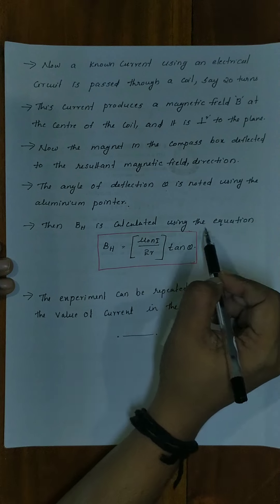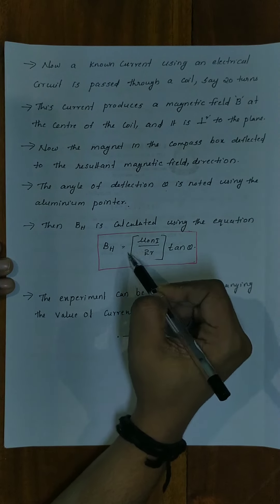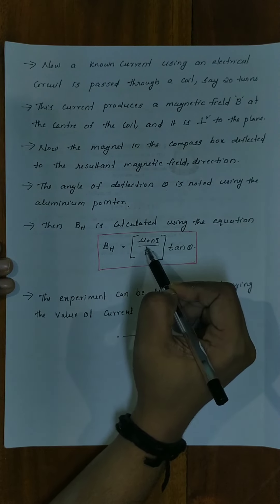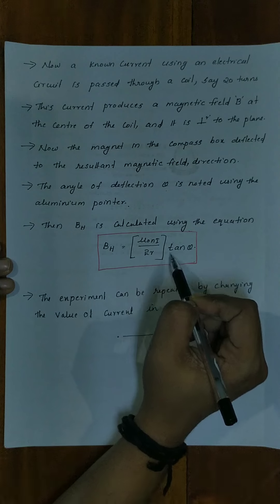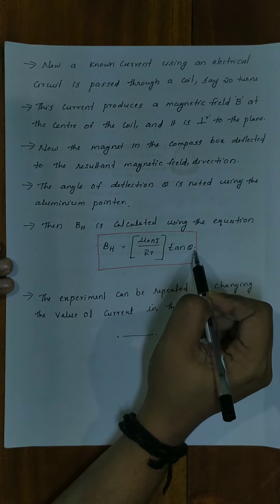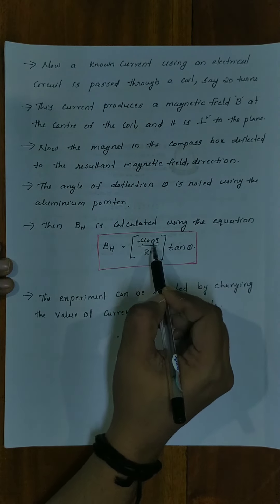Then BH is calculated using the equation BH is equal to mu₀NI by 2R into tan theta, where mu₀ is the permeability constant.